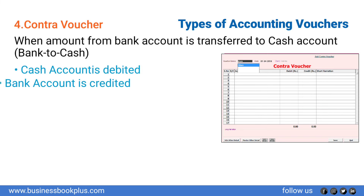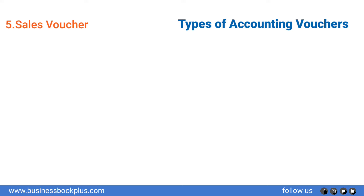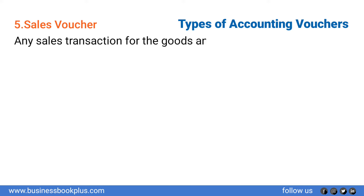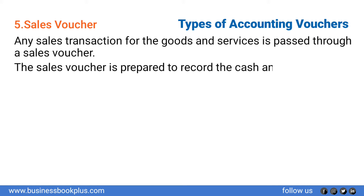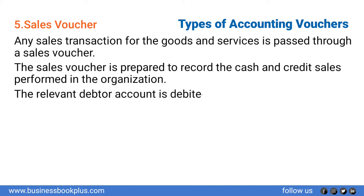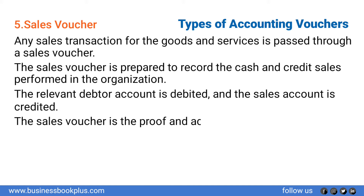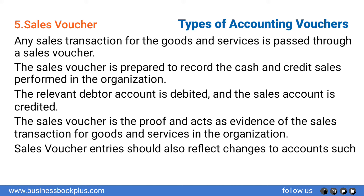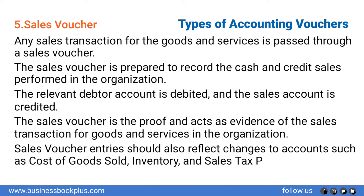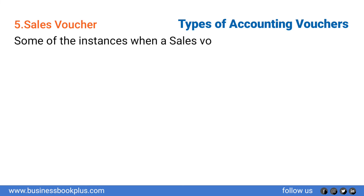Number five: Sales Voucher. Any sales transaction for goods and services is passed through a sales voucher. The sales voucher is prepared to record the cash and credit sales performed in the organization. The relevant debtor account is debited and the sales account is credited. The sales voucher acts as proof and evidence of the sales transaction. Sales voucher entries should also reflect changes to accounts such as cost of goods sold, inventory, and sales tax payable accounts.